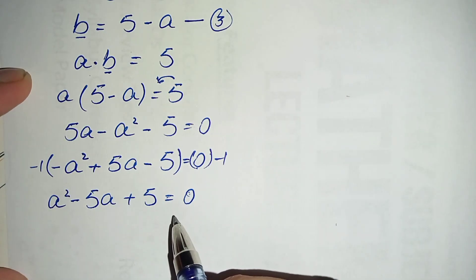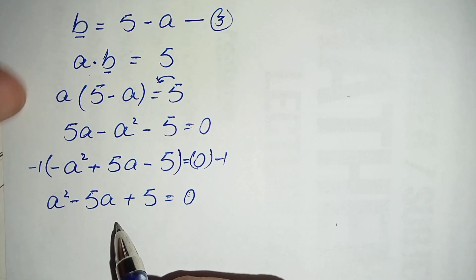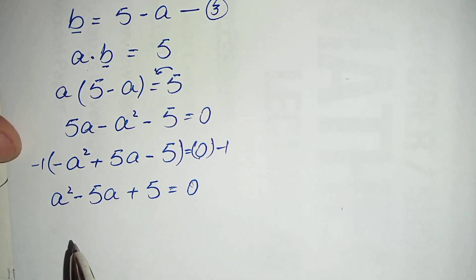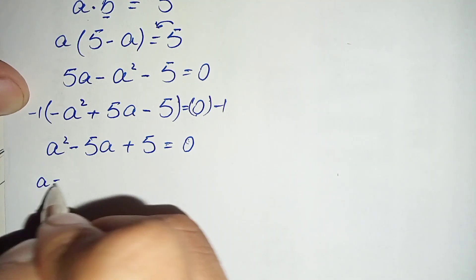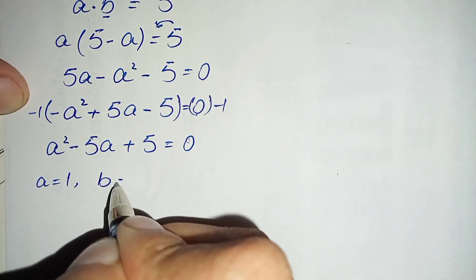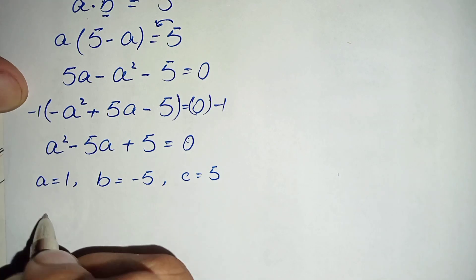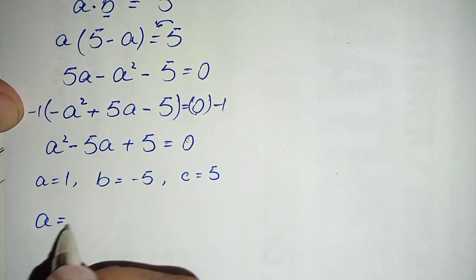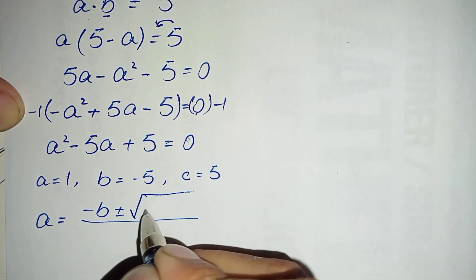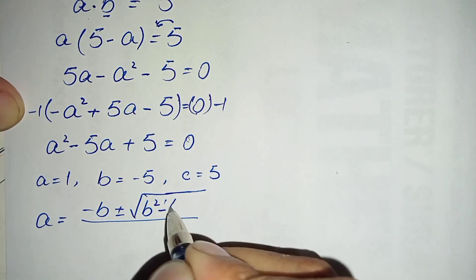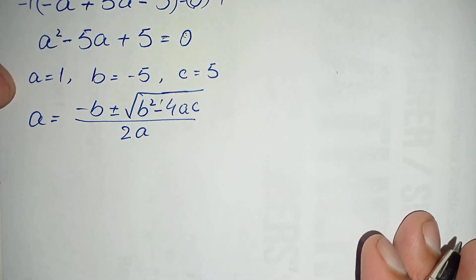This is the quadratic equation a² minus 5a plus 5 equals 0. We cannot solve it by factorization, so we use the quadratic formula. First we identify the values: a equals 1, b equals minus 5, and c equals plus 5. The quadratic formula is: x equals minus b plus or minus square root of b² minus 4ac, divided by 2a.